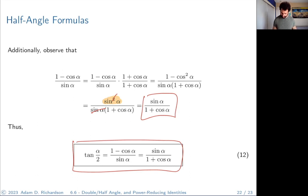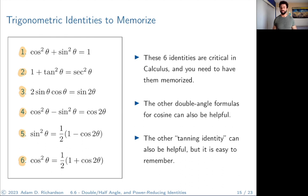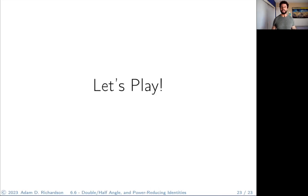That's it for section 6.6 — double angle formulas, power reducing identities, and half angle formulas. To re-emphasize: you must memorize those six identities. They will not be provided on the exam but will be essential in calc 1 and calc 2. Go try the homework; ask questions on Canvas. The next section is our last set of identities and will be quite short.